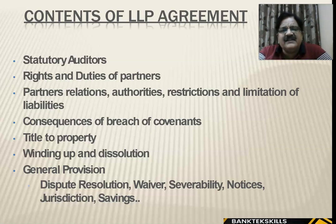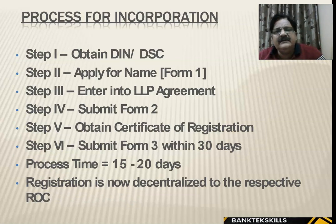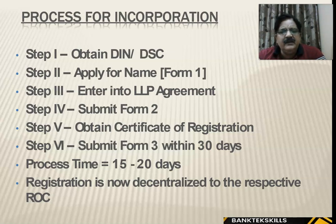Other contents include notices, jurisdiction, and savings. The process for incorporation: obtain a DIN (Designated Partner Identification Number), apply in Form 1, enter the LLP agreement, submit Form 2, obtain certificate of registration, submit Form 3 within 30 days. Process time is 15 to 20 days and the LLP can be brought into existence.